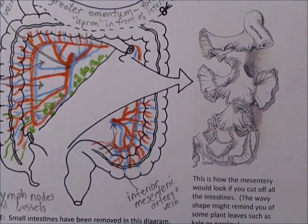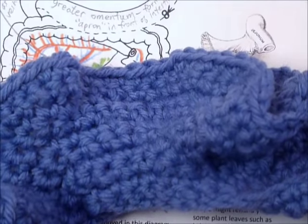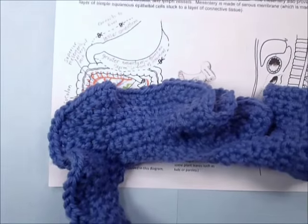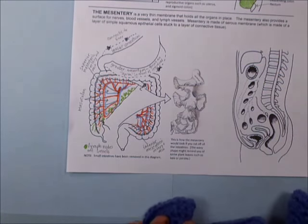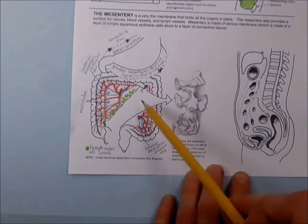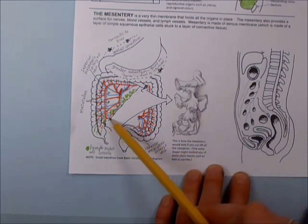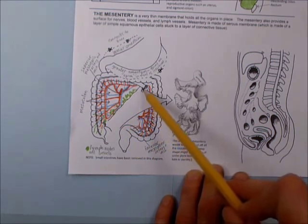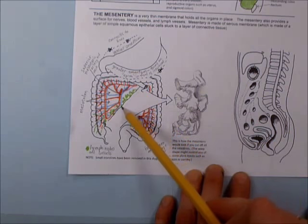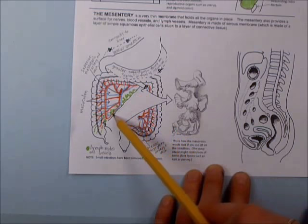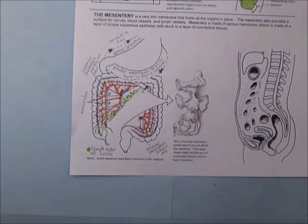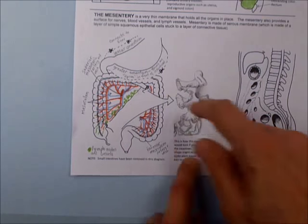The reason it's ruffly — I've got to show you a piece of crochet; this will make more sense. Why does it have to be this ruffly shape? The attachment point — the root, they say, of the mesentery — is right along this line. Along the diagonal, this is where this sheet of tissue is attached. So where it's attached, it's only this long and pretty straight.